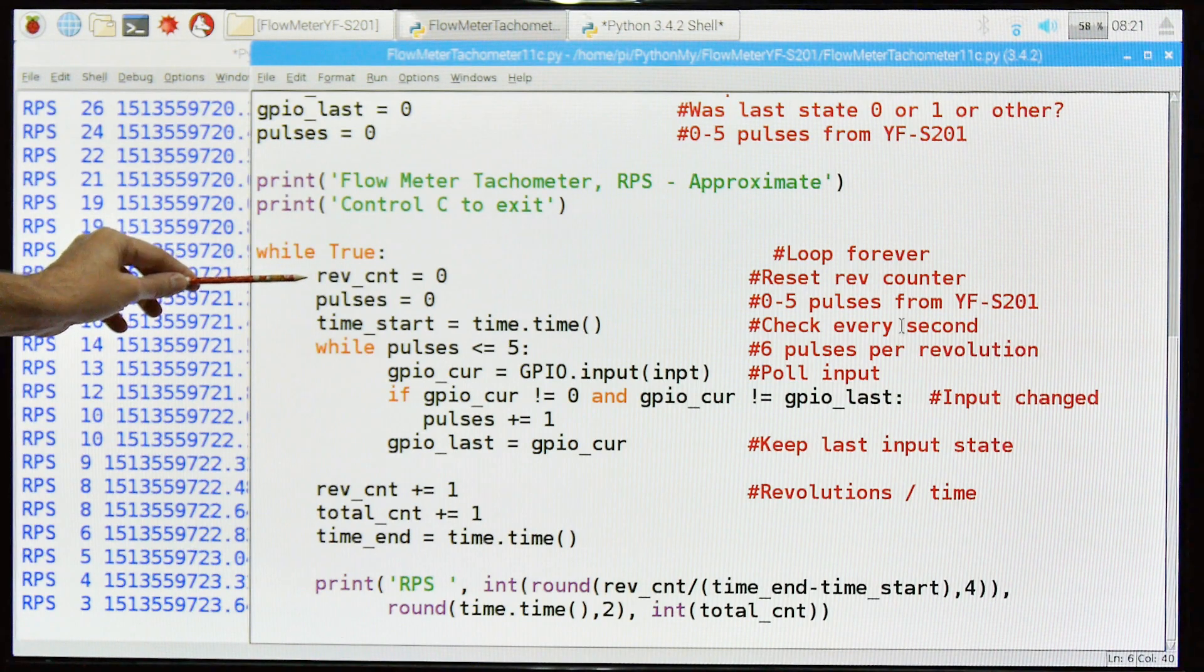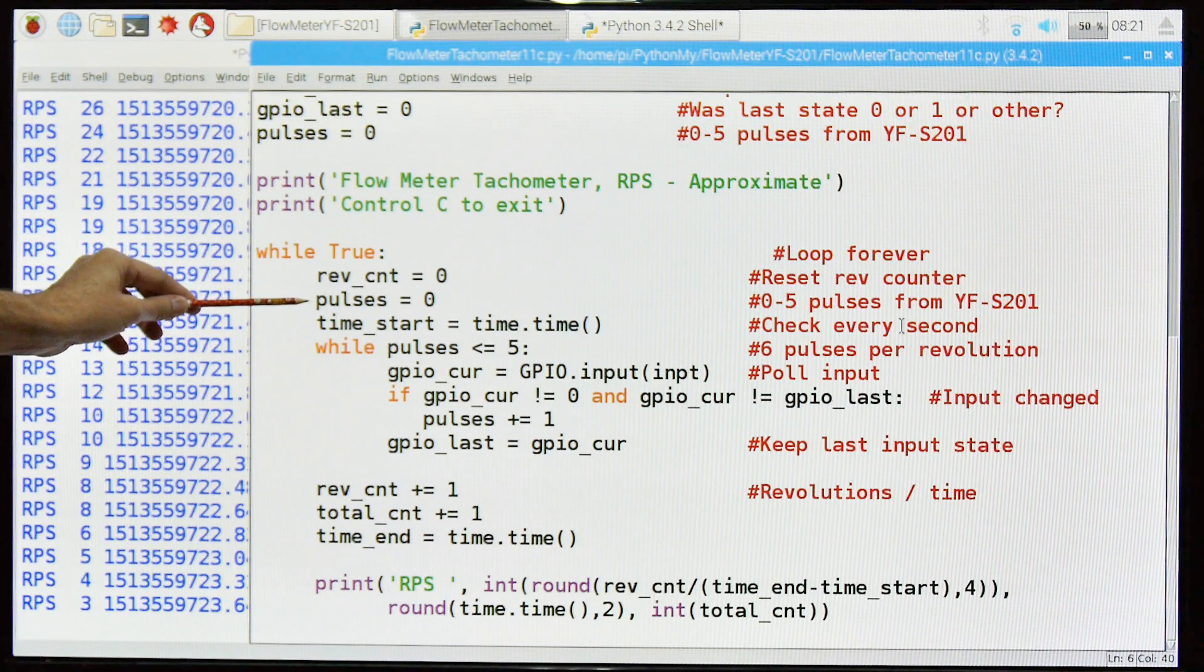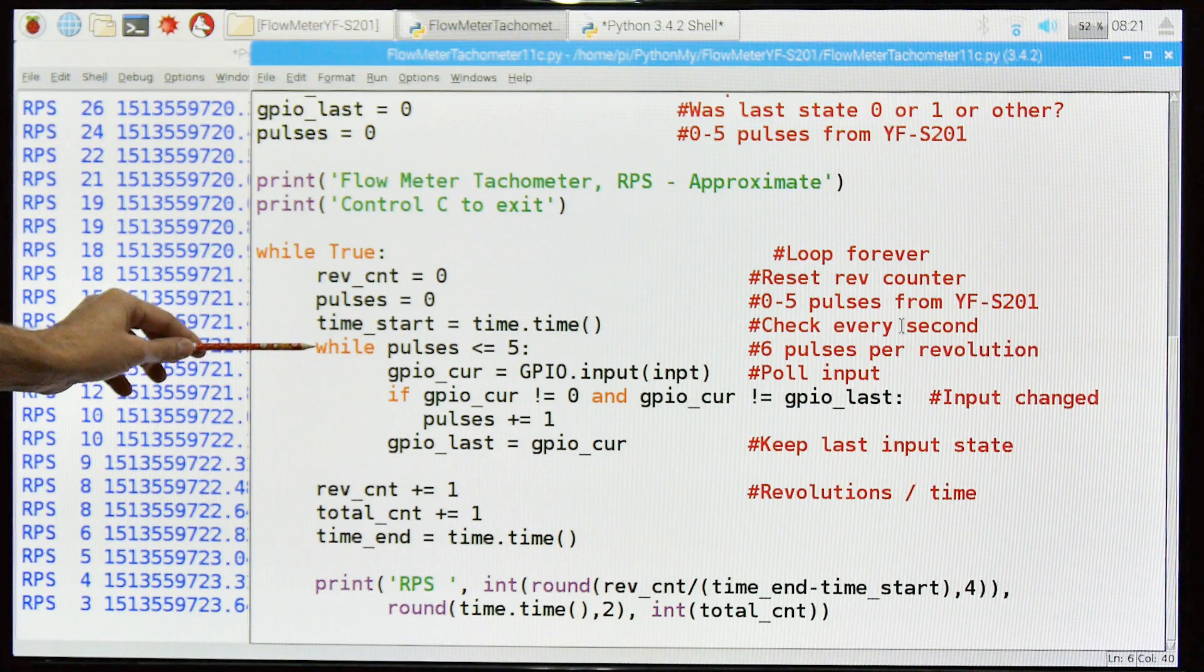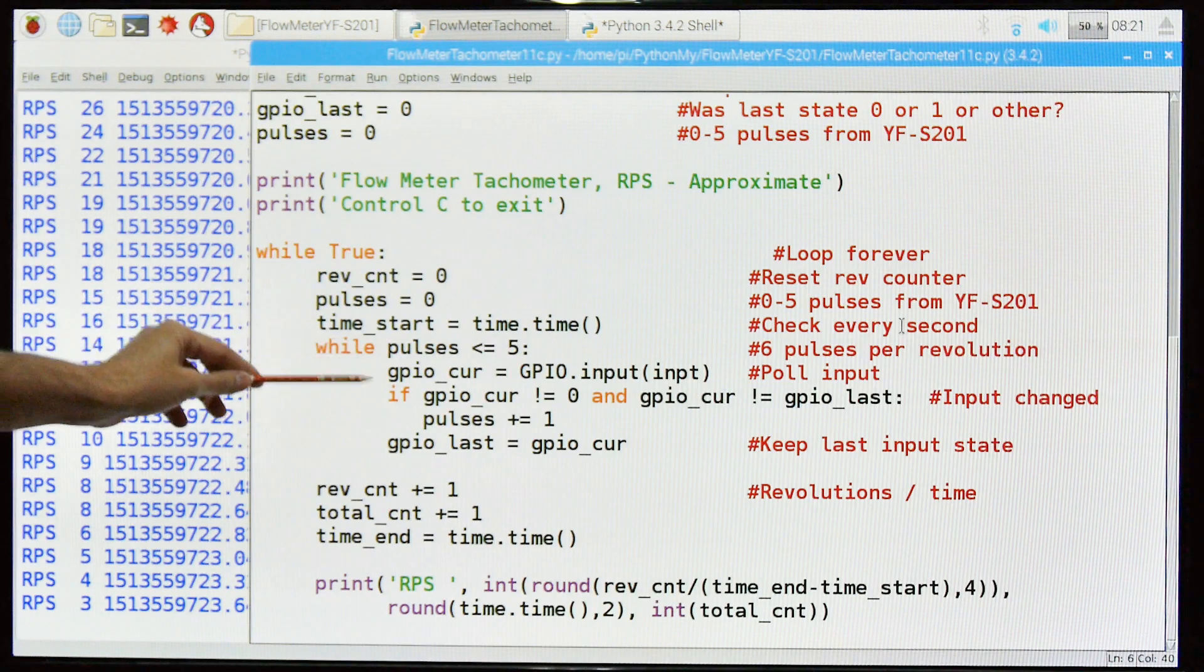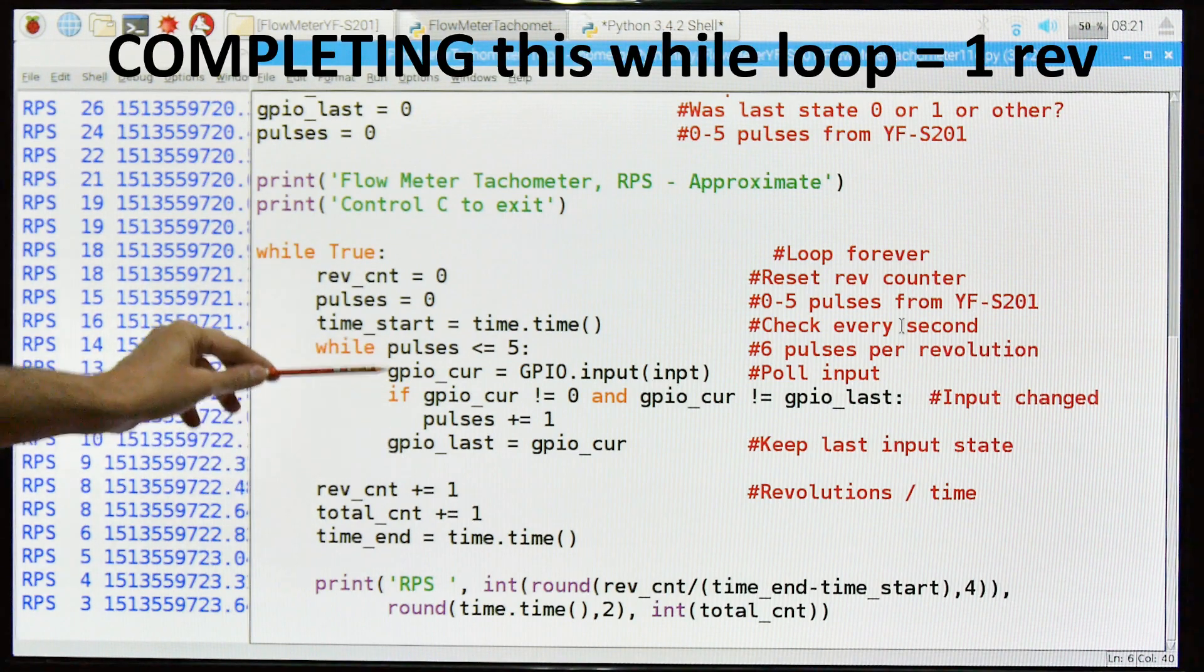First line in the infinite loop is the revolutions count, we're going to reset that to zero. We're going to reset the total number of pulses, the zero to six pulses. We're going to trap the start time. Then we're going into this second while loop where we look for six pulses, in other words one revolution. So every time it goes through this loop it should be one revolution, from zero to five.